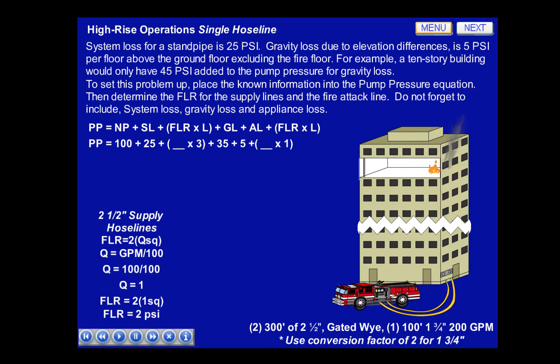First, we'll determine the friction loss rate for the 2.5-inch supply hose lines. We'll use FLR equals 2 times Q squared. Q will equal GPM divided by 100, and in this case we'll use 100 GPM since on the fire ground there's 200 GPM overflowing two lines into the FDC. So Q will equal 1, and the friction loss rate equals 2 times 1 squared, giving an FLR for the 2.5-inch hose of 2 PSI.